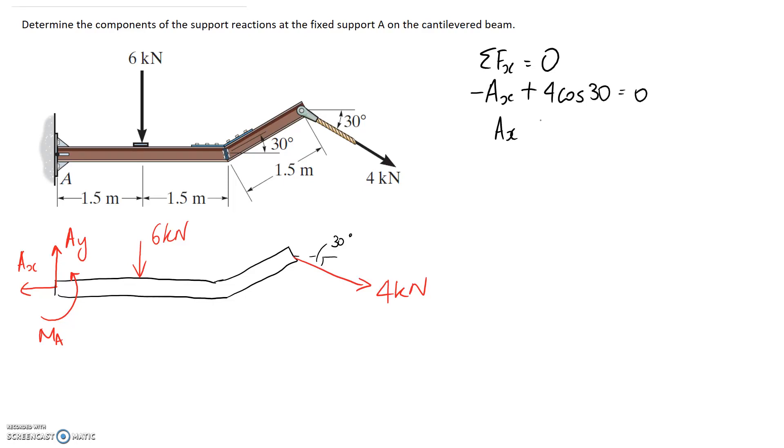So Ax is going to be equal to this here. This of course flips to the other side and makes it positive. So we end up with a positive answer which is 3.46 kilonewtons. It comes out positive that means it was correct on the diagram so it is indeed back this way.